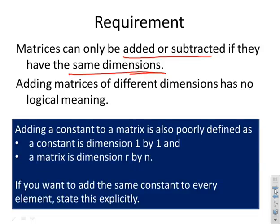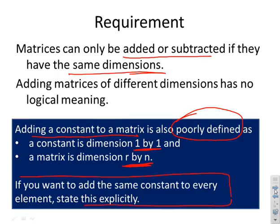Here's an example where students could easily make a mistake. What if you wanted to add a constant to a matrix? This is a poorly defined concept because a constant could be considered a 1 by 1 matrix, whereas the matrix may have dimension r by n. If you want to add the same constant to every element in the matrix, then you should state this explicitly.